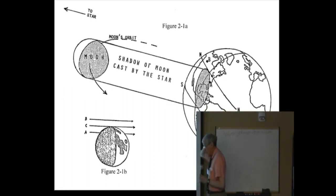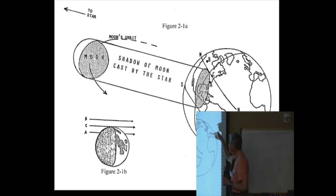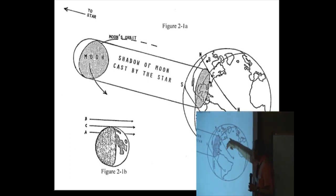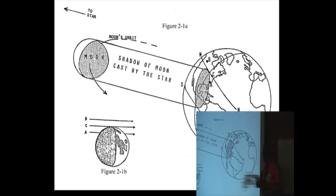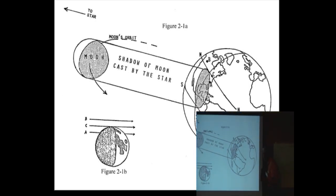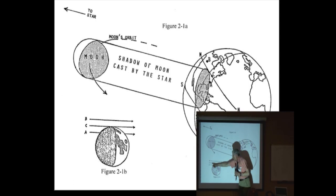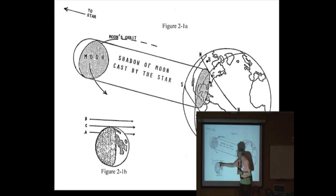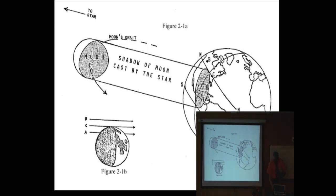I'm showing this to illustrate a more interesting geometry that occurs if you happen to be right at the northern or southern limits of the region of visibility of the occultation. Then what you get is a grazing occultation, with the path of the star as a tangent line to the moon's disk, and you get multiple disappearances.